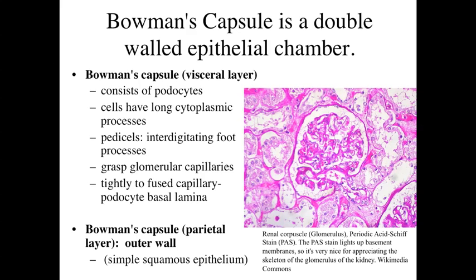The outer region of Bowman's capsule is referred to as the parietal wall. Instead of lining the capillaries, it lines the external region of Bowman's capsule, delineating what's called the urinary space. It collects that raw filtrate so it doesn't diffuse away, and directs it into the uriniferous tubule system.